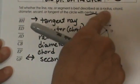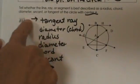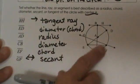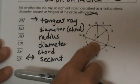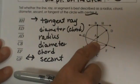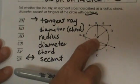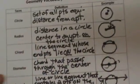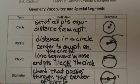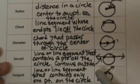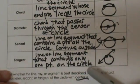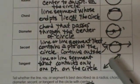So those are the terms: radius, chord, diameter, secant, and tangent. And of course we call this circle A because A is the center of the circle. There is our geometry basic vocabulary — I'll scan back over that so you can see all the information on those definitions.